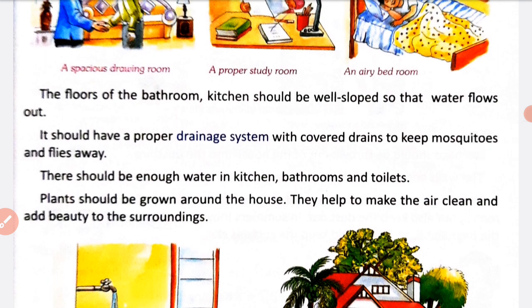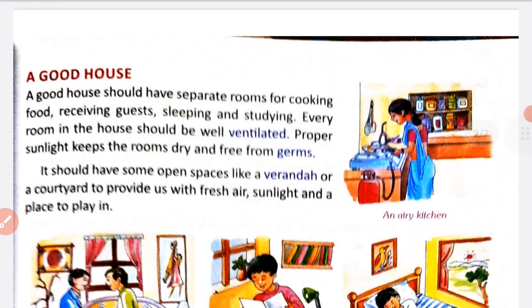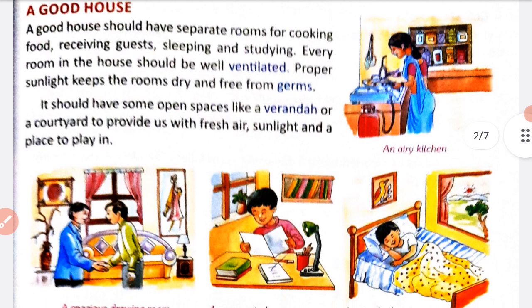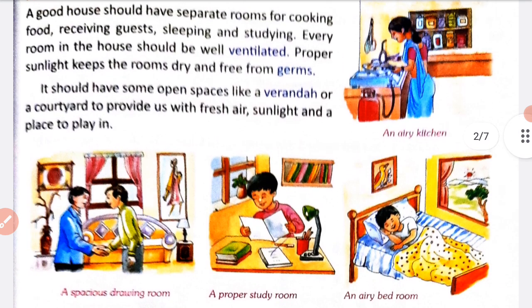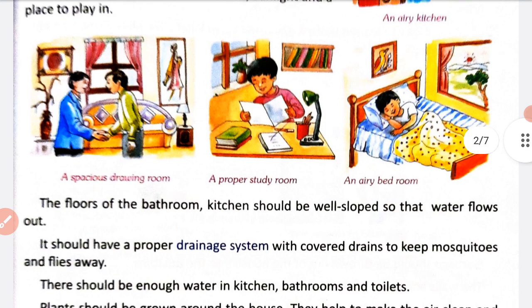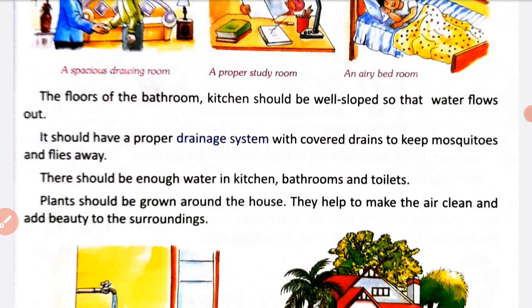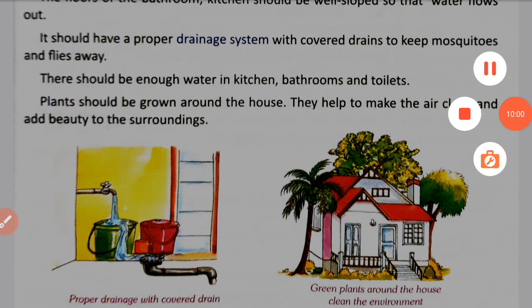We will complete this chapter in the second video. In this first part we have learned: a good house should have separate rooms for cooking food, receiving guests, drying, bedroom, and study room. There should be open space with proper sunlight and fresh air. Good house mein ventilation hona chahiye, covered drainage system hona chahiye, aur sufficient water in kitchen, bathroom, and toilets. Okay friends, we will complete this chapter in the next video — keep learning, stay tuned!